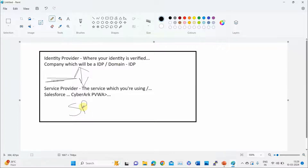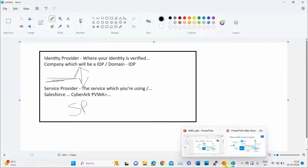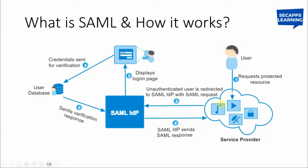In the interview it may be asked: what is SP or IdP — both are different. SP is the Service Provider, and IdP is the Identity Provider. Looking at the diagram, this is the user. He clicks on a particular web application and gets redirected to the logon page. If you are already working in an organization, you might have seen that when you type a URL, it automatically changes to something like 'logon.microsoft...' — that is your SAML logon page.